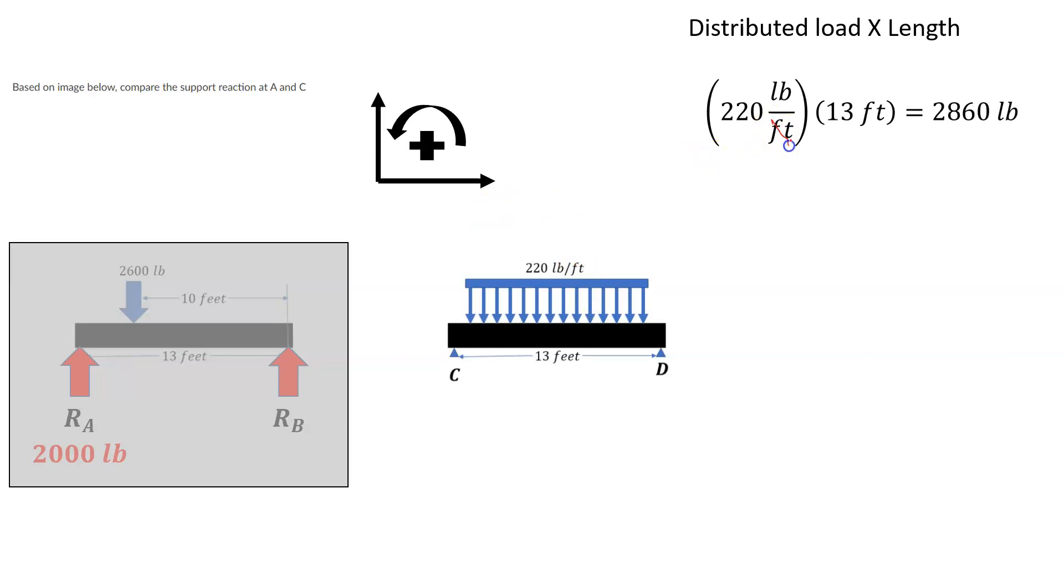And as you can see, the feet cancel out, multiplied by 220 times 13, we end up with 2860 pounds. So we have an effective load of 2860 pounds, and it locates because it's a uniform distributed load right at the midpoint at 6.5 feet. So there we've got an effective load right there in the middle. It is greater than the 2600 pounds. You'll see how this is going to affect the outcome of the problem.